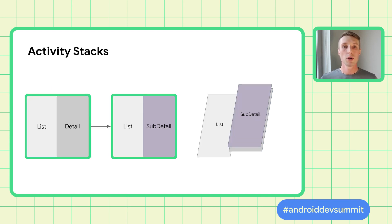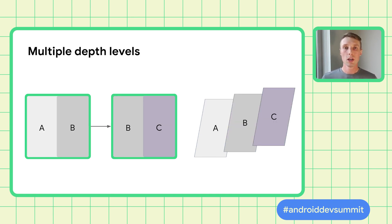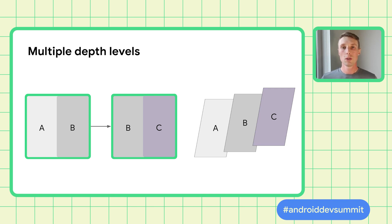When you have multiple activities in the secondary container, they automatically show up within the same bounds when launched, and the existing activity launch and intent resolution rules apply. The library also supports navigating deeper than one level, creating multiple splits — it always shows at most two panes, shifting earlier panes off screen when launching new ones. For example, if you have an existing split with activities A and B and you launch a new activity C to the side, it creates a second split with B and C.